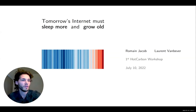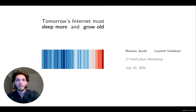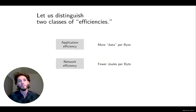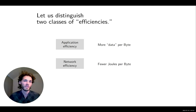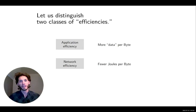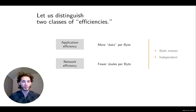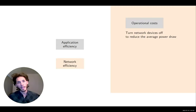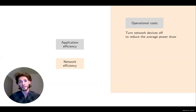Welcome. I'm from ETH, and I don't think I need to advertise to this crowd that we need to improve the energy efficiency of the internet. However, I'd like to differentiate two classes of efficiency before we start. Application-side efficiency refers to packing more data per byte transmitted, whereas network efficiency is about using fewer joules of energy per byte you actually need to transmit. Both aspects are very important, and luckily they are fairly independent, so we can look at each without caring too much about the other. Today I will focus on network efficiency.